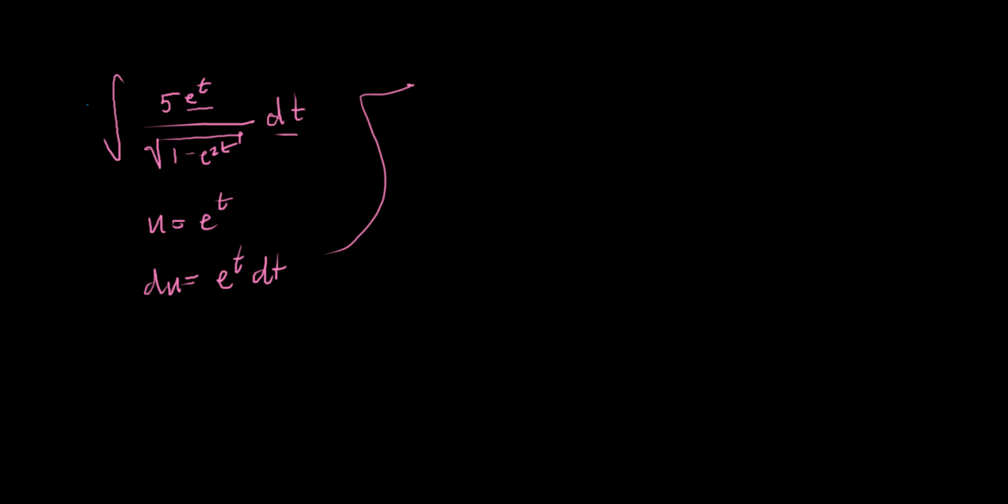And so we move up here and we do that. We can pull the 5 out front, and then we just get 1 over the square root... we had 1 minus e^(2t), that's like saying e^t squared. So we have 1 minus, and e^t is u, so we have 1 minus u squared dt.